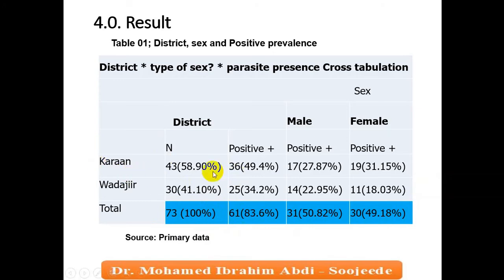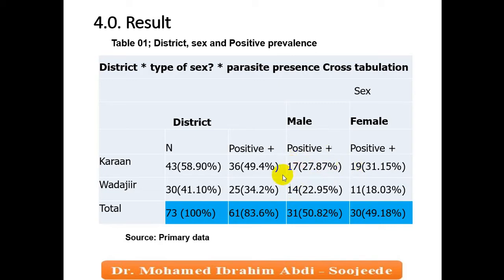The first district, Karan, had 36 positive samples, equal to 49.4%, and the second district, Wadajir, had 25, equal to 34.2%, for a combined total of 61 positive samples. In Karan, the male positive number was 17 out of 27, and 17 plus 19 totals 36 positive, with percentages of 27.87% and 31.15% equaling 49.4%.